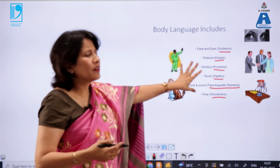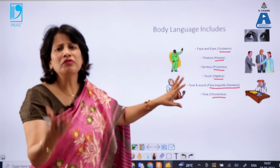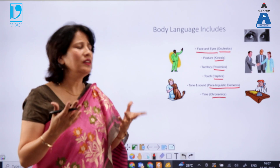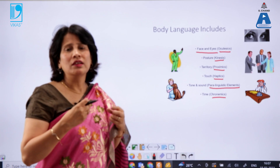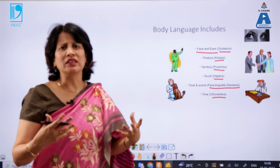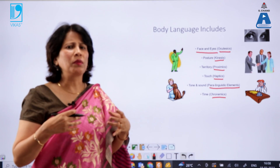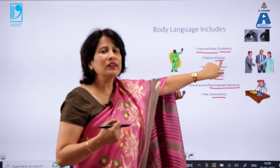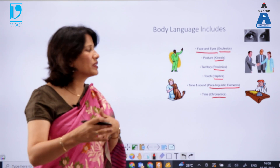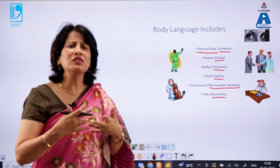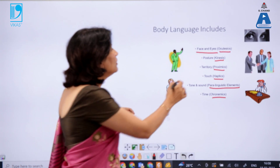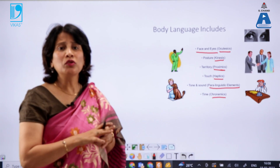Whatever communication I convey through my face and eyes — for example, looking at somebody while angry, frowning with wide-open eyes — is termed oculesics. Whatever I communicate through my posture — whether I'm standing straight, sitting with a slouch, or not walking properly — is included under kinesics. Proxemics is the space language: the communication conveyed by standing very close to or far apart from a person is included under territory, which is proxemics.